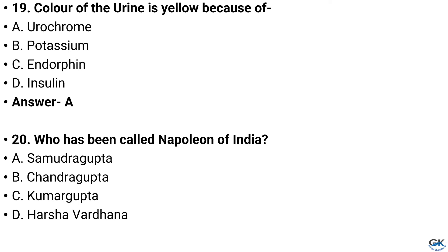Question number 20. Who has been called the Napoleon of India? Option A: Samudra Gupta, Option B: Chandra Gupta, Option C: Kumara Gupta, Option D: Harshavardhana. And the answer is Option A: Samudra Gupta.